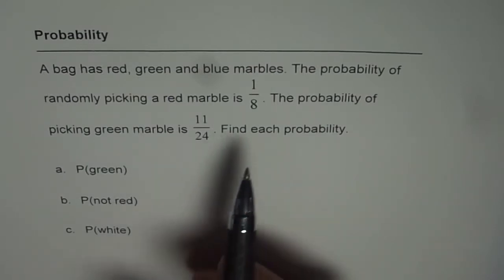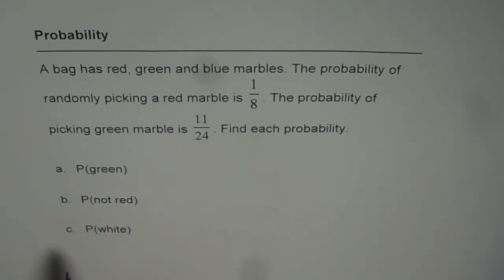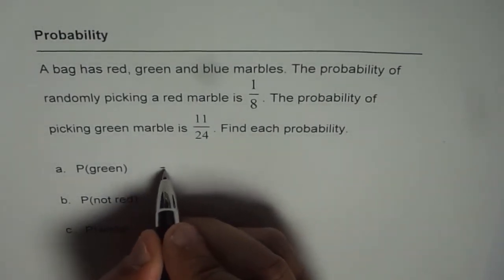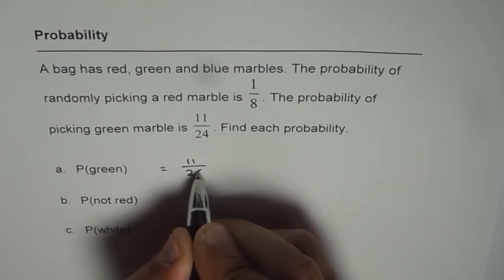We need to find the probability of picking a green marble. It is already given to us as 11 out of 24, so we can write this as 11 over 24.